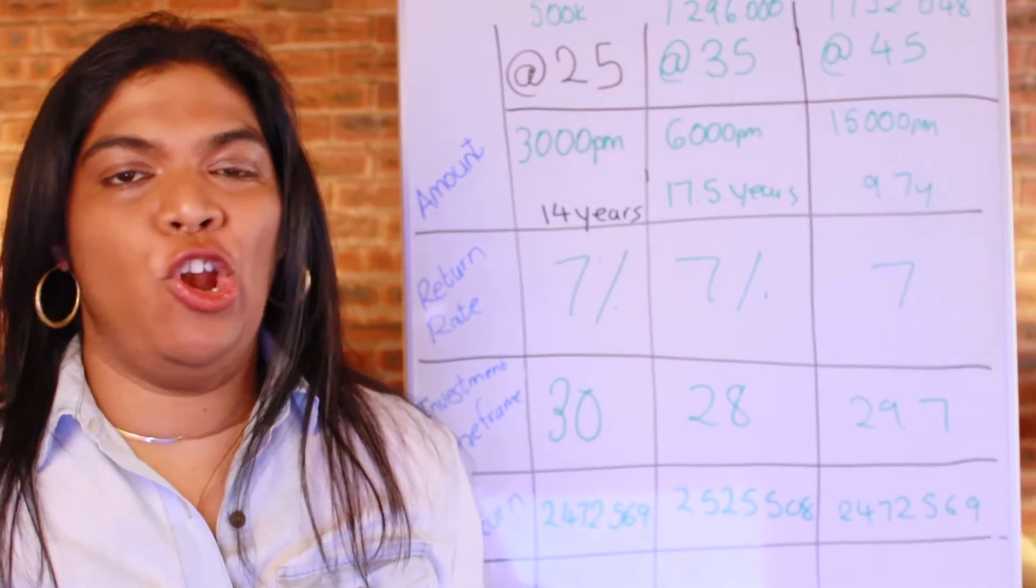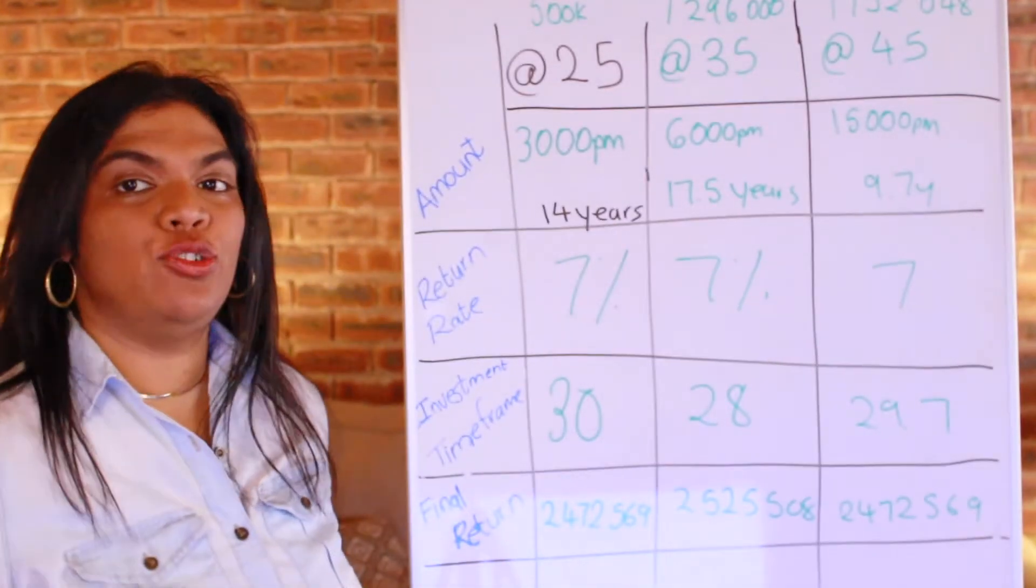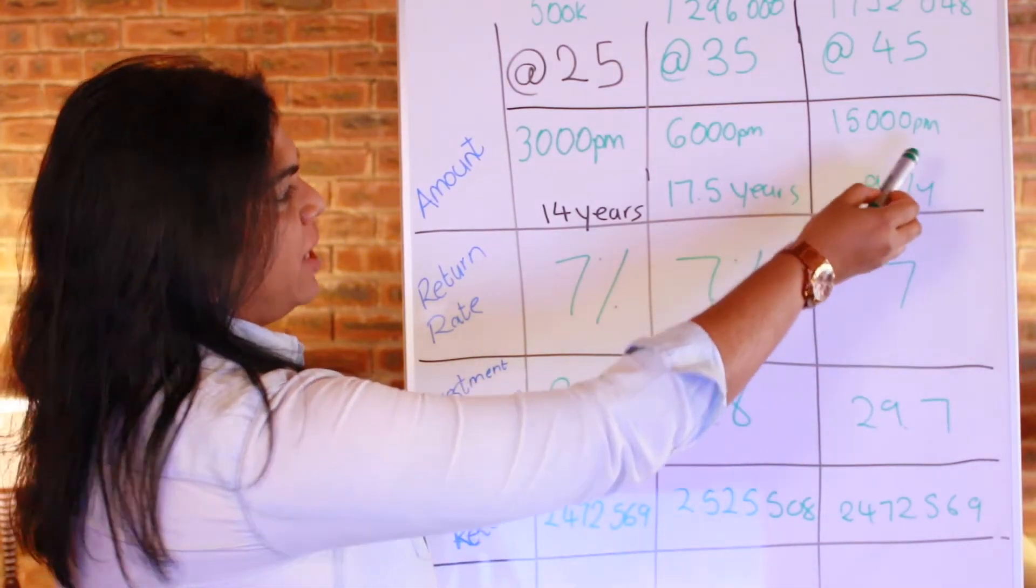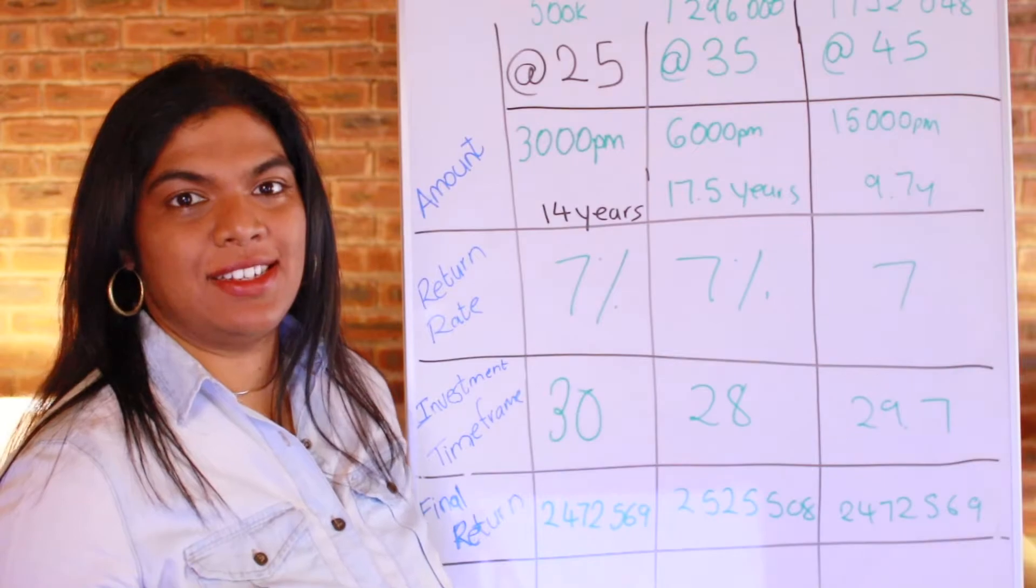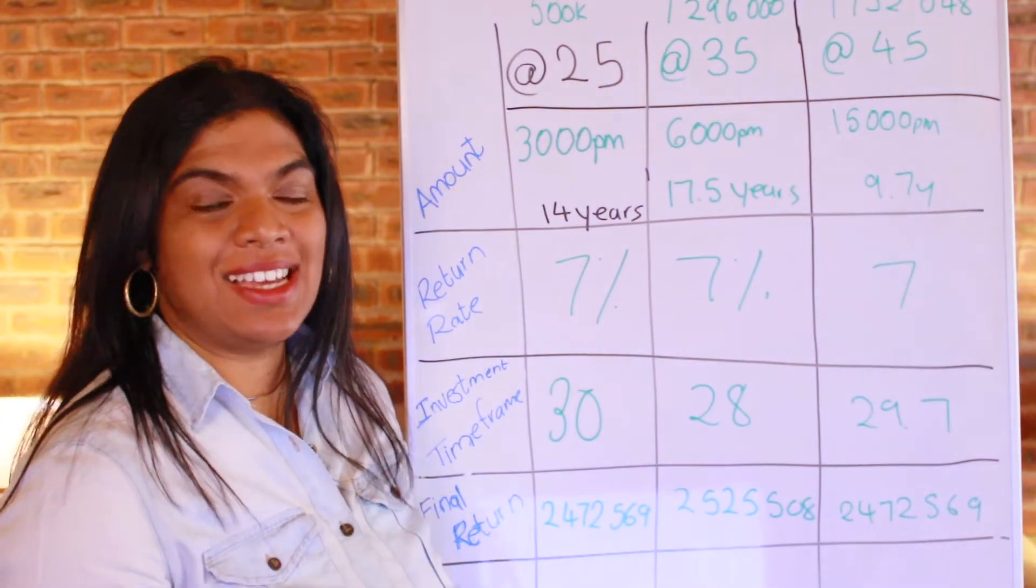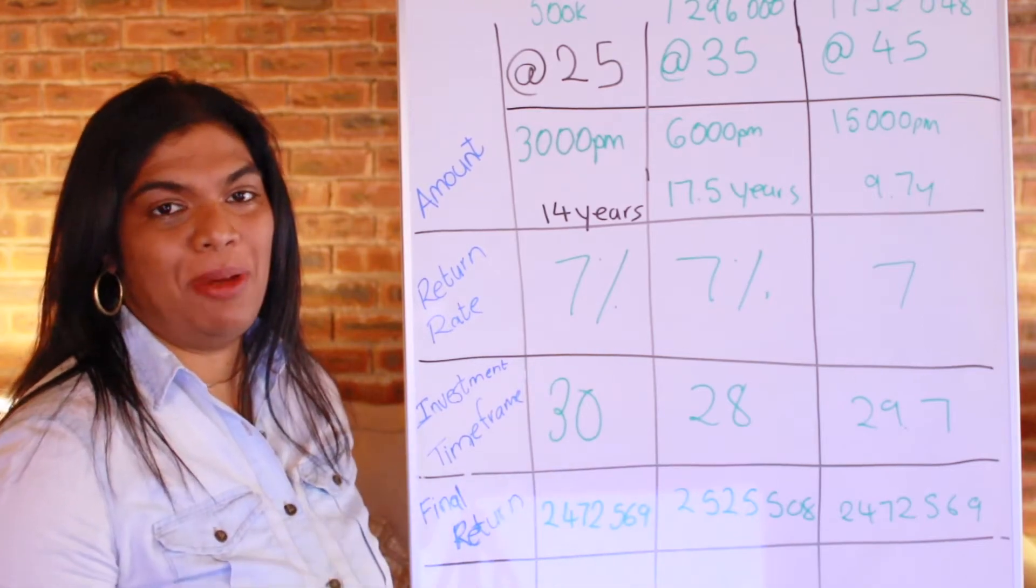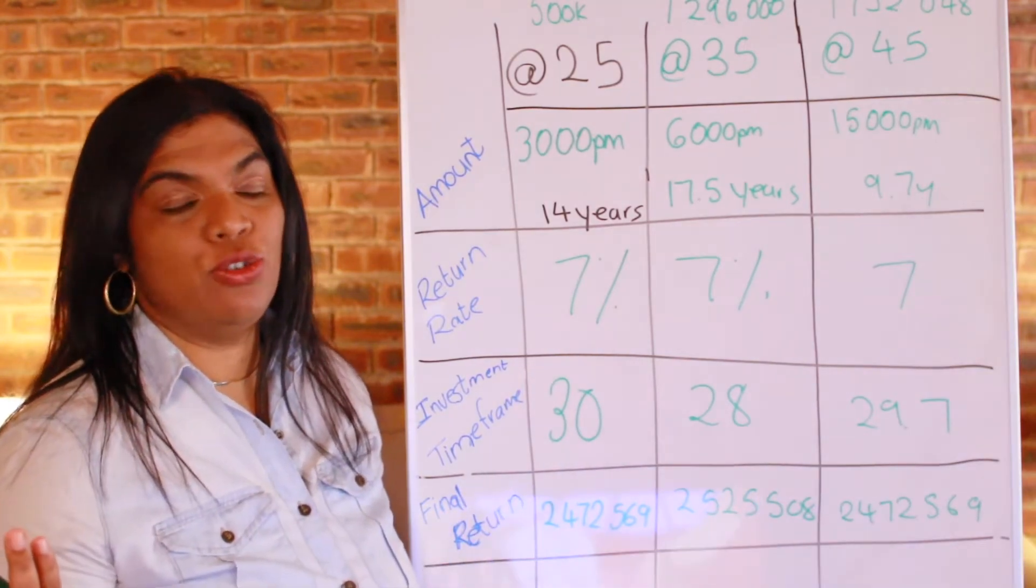So if you choose to wait even longer, let's say age 45 to start investing, this is what it could look like. You would have to invest 15,000 rand a month for 9.7 years. Not all of that will be in a tax-free platform. 3,000 will go into a tax-free platform. The balance into, let's say a unit trust, for example.